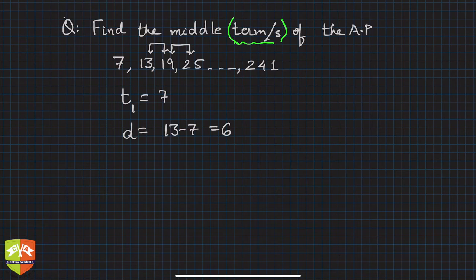Hence we have to find out the middle term. For finding the middle terms, we need to find out the number of terms first in the AP, because middle terms exist only in finite AP. You cannot have middle terms in infinite AP.